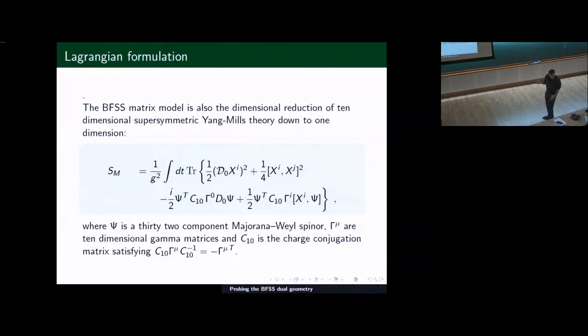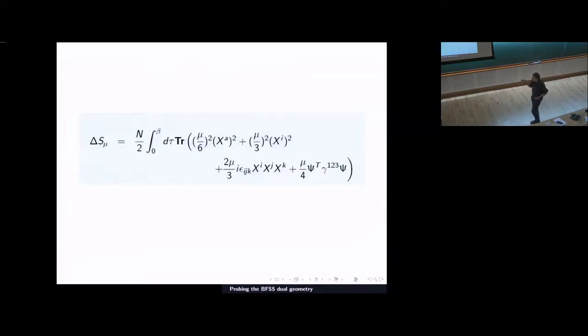The Lagrangian for this system is an integral over time, with one covariant derivative implementing the Gauss-Law constraint with the gauge field. This flat potential with the flat directions we've heard much about, and we have the fermionic sector. In this formulation, this is a 10 dimensional supersymmetric Yang-Mills reduced to one dimension, and psi is a 32 component Majorana fermion. The Clifford Algebra is satisfied. And there's an additional term in the action for the BMN model.